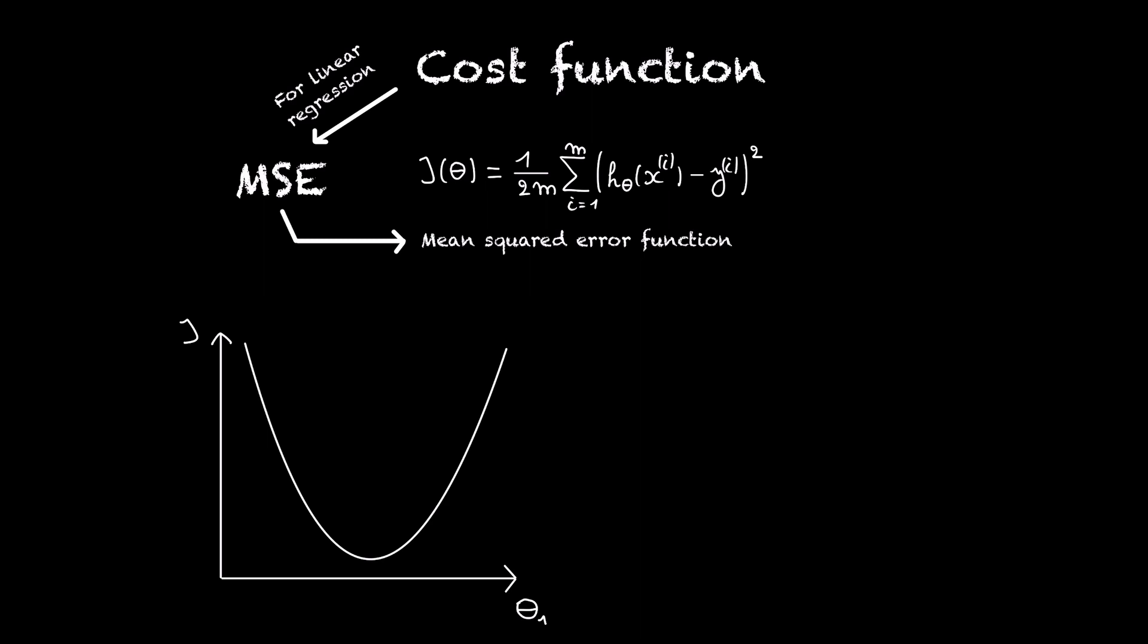You may also remember that for linear regression, this function was always a convex function, meaning that when we used gradient descent to minimize this cost function, we would always end up in the global minimum.